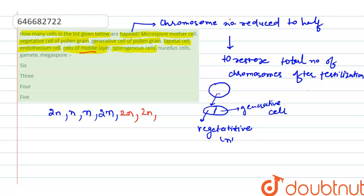And another option is sporogenous tissue. Sporogenous tissues or cells are also diploid in number, as they are not related to pollen grain. These are related to anther, so this will also be 2n.